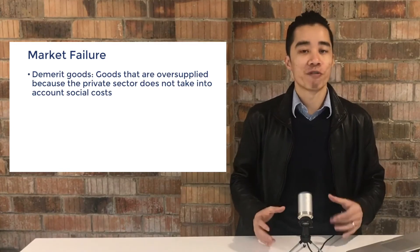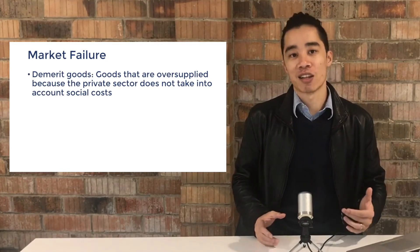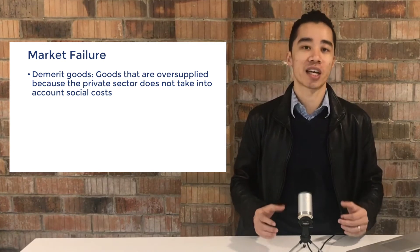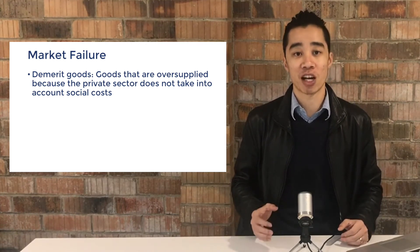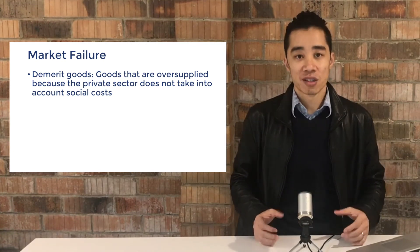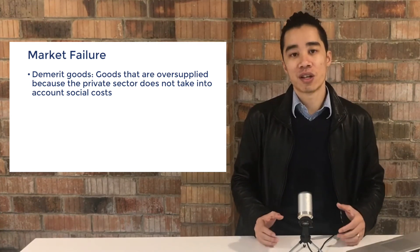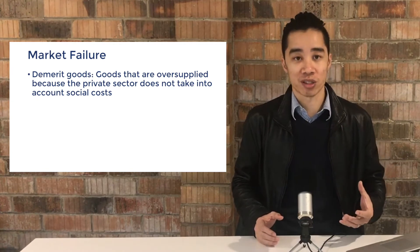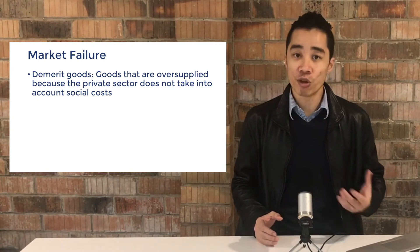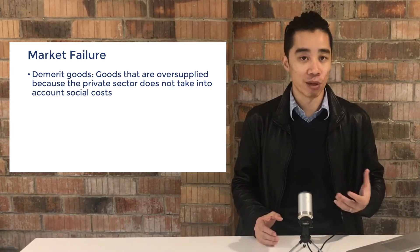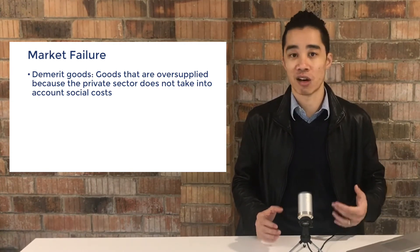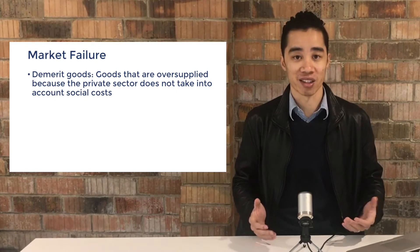Demerit goods are goods with negative externalities, which are the social costs not taken into account by the price mechanism. Cigarettes are considered a demerit good because of the social costs such as the nuisance, the pollution, as well as the health issues that arise from smoking.